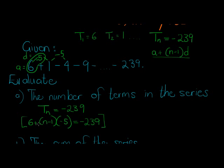So what do we have? Let's just subtract the 6 on both sides, minus 6, so that gives me n minus 1 times negative 5 is equal to—negative 239 minus 6 is negative 245.